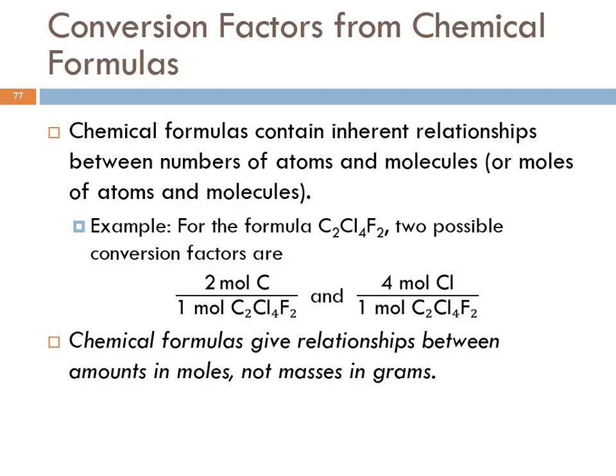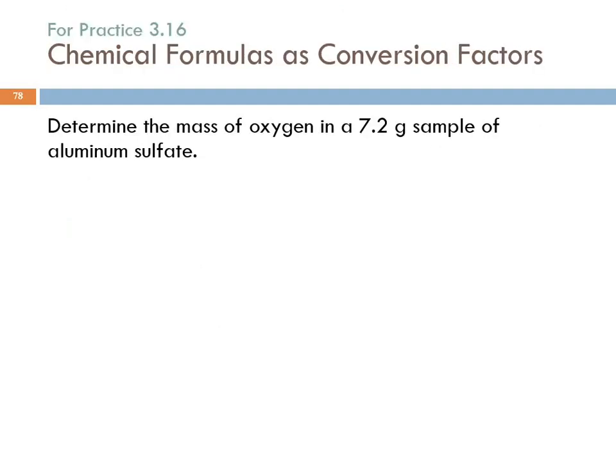The formula gives relationships between particles, atoms and molecules, not mass. Determine the mass of oxygen in a 7.2 gram sample of aluminum sulfate. There's more than one way to solve this problem. The title of this example is Chemical Formulas as Conversion Factors, so we're going to choose that method. We have 7.2 grams of aluminum sulfate. And we want to find the mass of oxygen. We need the formula for aluminum sulfate.